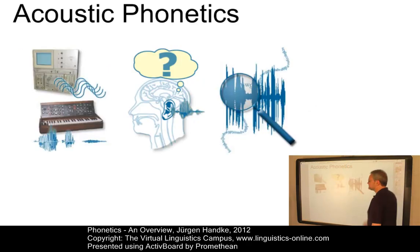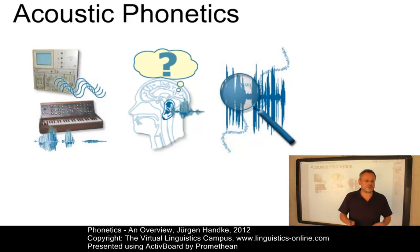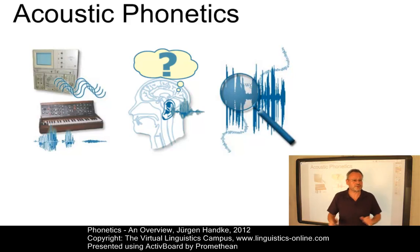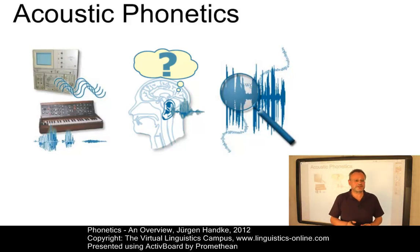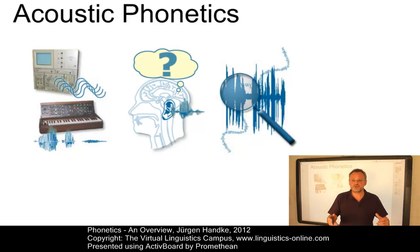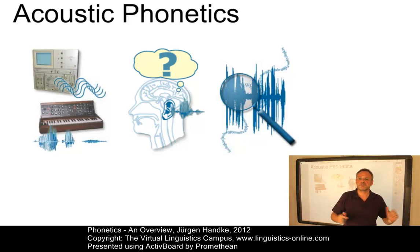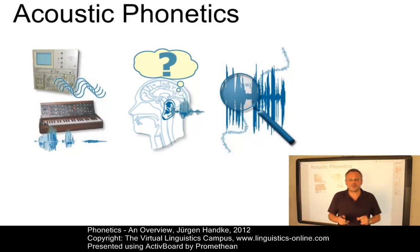Acoustic phonetics studies the physical properties of the speech signal. This includes the physical characteristics of human speech, such as frequency patterns, the analysis of friction noise, etc. There are numerous factors that complicate the straightforward analysis of the speech signal — for example, background noise, anatomical and physiological differences between speakers, and many more. These aspects are studied under the heading of acoustic phonetics.